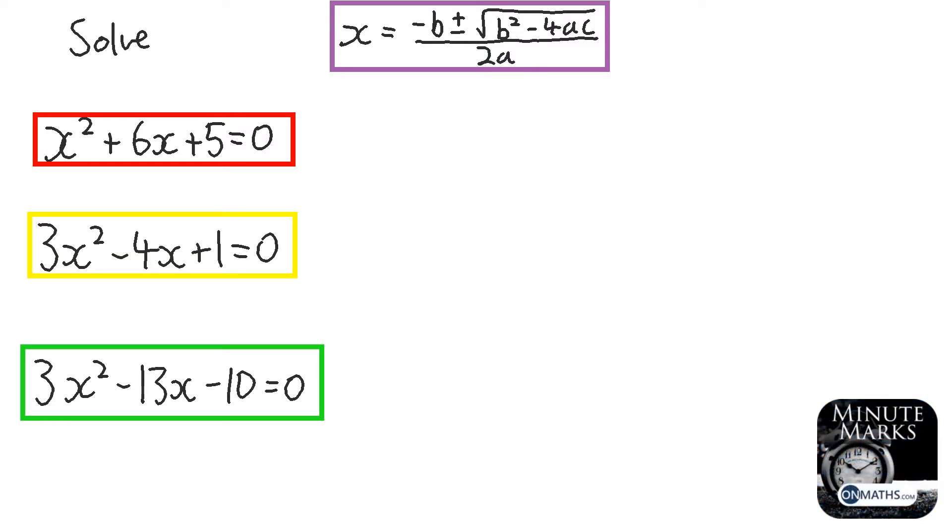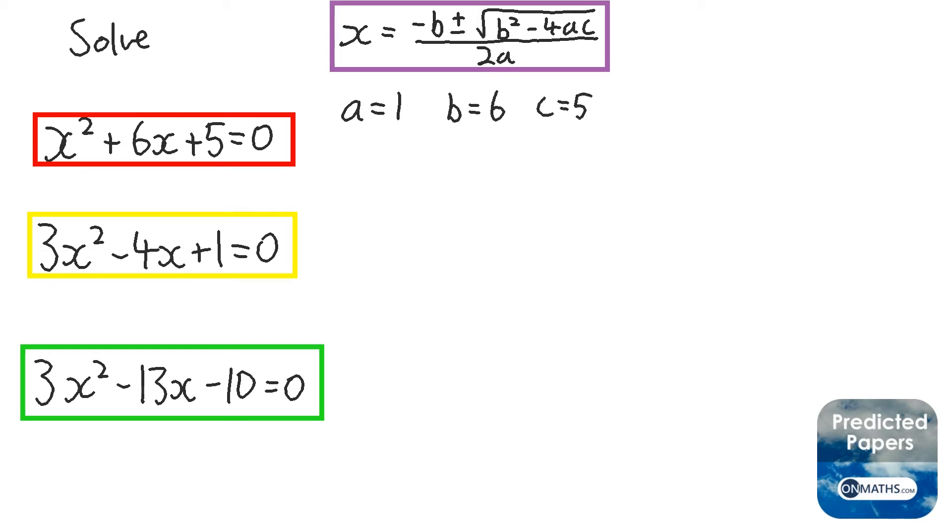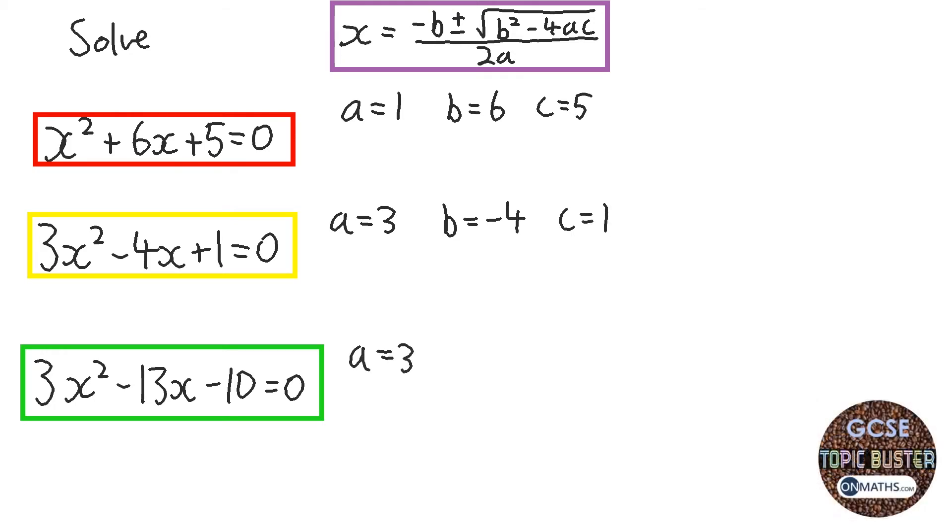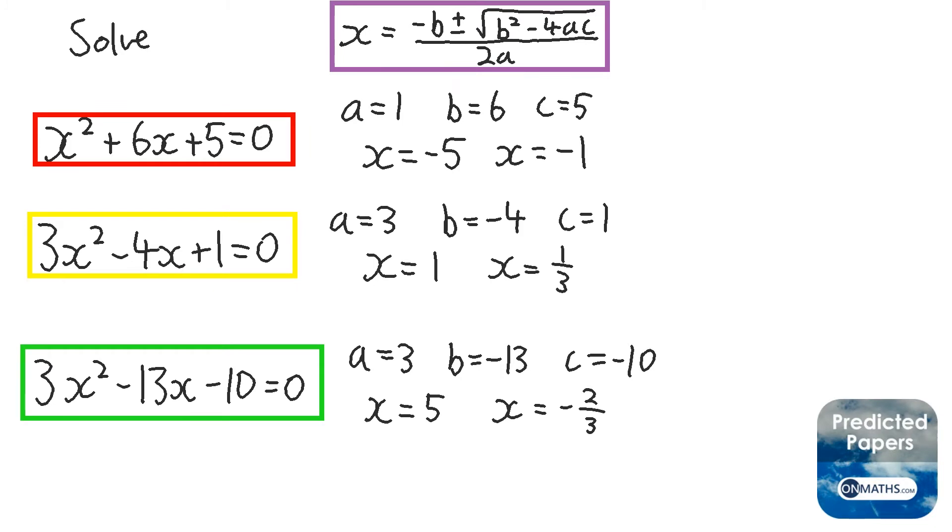Okay, so first we'll go through these and find out what a, b, and c are for each of them. And then I'll reveal the answers at the end. So first one, a is one, b is six, and c is five. Second one, a is three, b is minus four, c is one. And the third one, a is three, b is minus 13, and c is minus 10. Okay, so the answers are shown now. Now you might notice that all of these are quite simple answers, however, whole numbers or fractions. Now that's because these could have been factorised. We could have factorised these to solve them. And normally with a quadratic formula, it's ones that we can't factorise, which we're going to on to next. Okay, have a go.